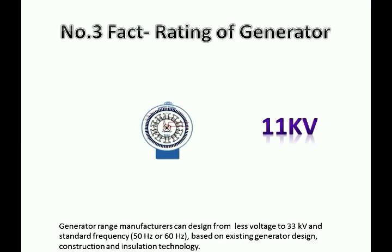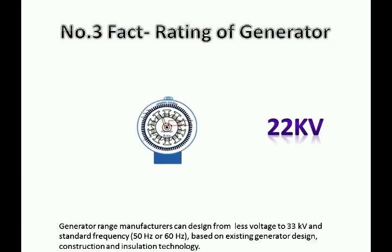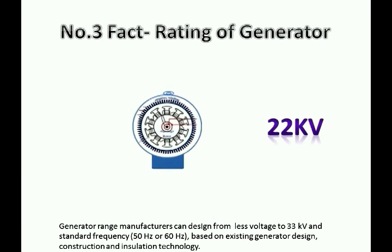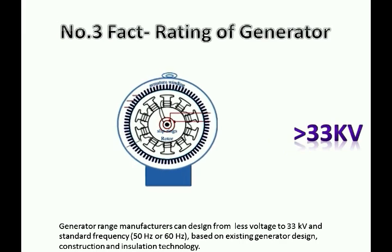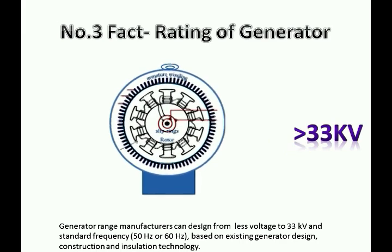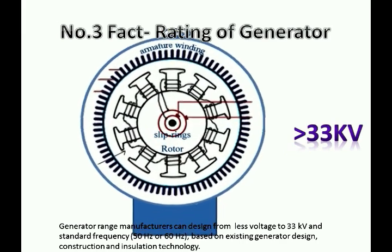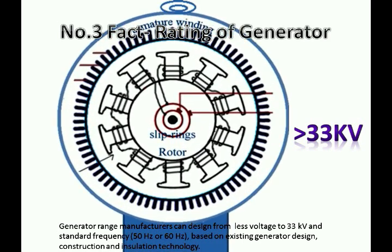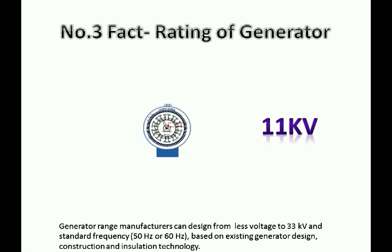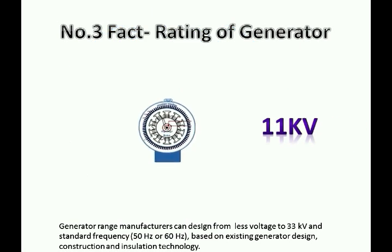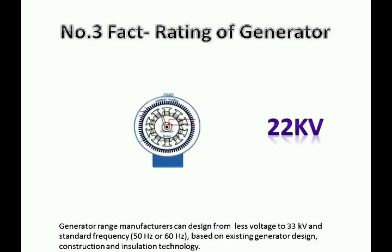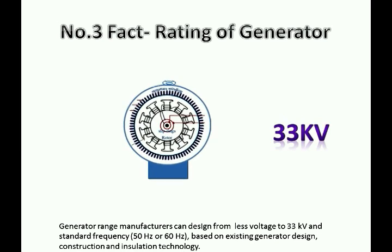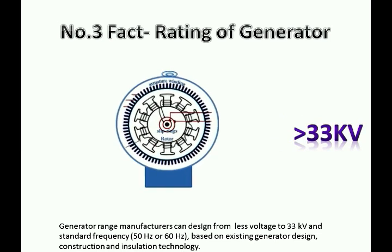Third interesting thing: a generator manufacturer can design a lesser voltage up to 33 kV, and the standard frequency is 50 Hz to 60 Hz. Why does the power station range from 11 kV to 33 kV? Let us consider if the generator capacity is 100 MW. If we use an 11 kV generator, the current in the stator will be very very high compared to the 33 kV generator. And also, if we reduce the current level, then the copper loss will also reduce.